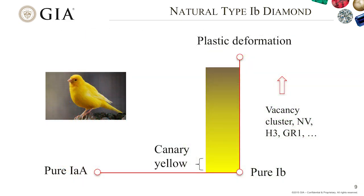If we put this together: a pure 1b diamond has 100% nitrogen in isolated form, while a few may show a limited amount of A-form nitrogen. They have very strong plastic deformation, and with that, defects like vacancies, H3 clusters, NV centers, GR1, and many other centers can be introduced over the long geological history, generating brownish or greenish color. So only a very small amount — if any — of natural 1b diamonds would show the color of a real canary bird: that beautiful pure yellow with bright white gradient. It is very rare.